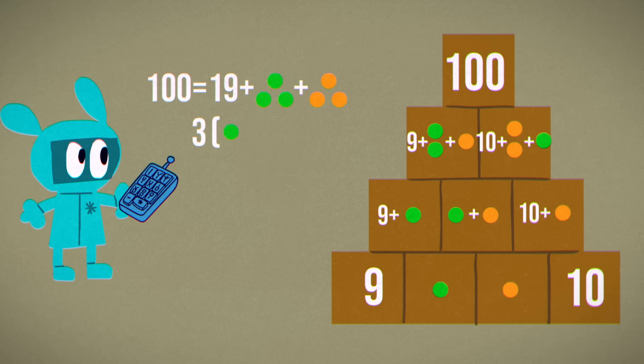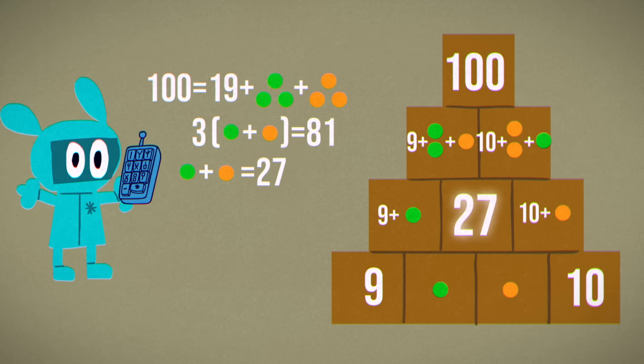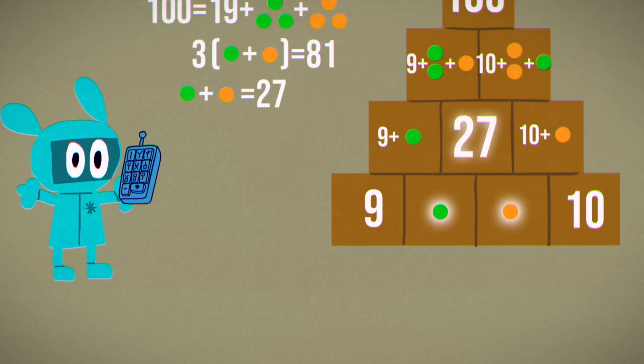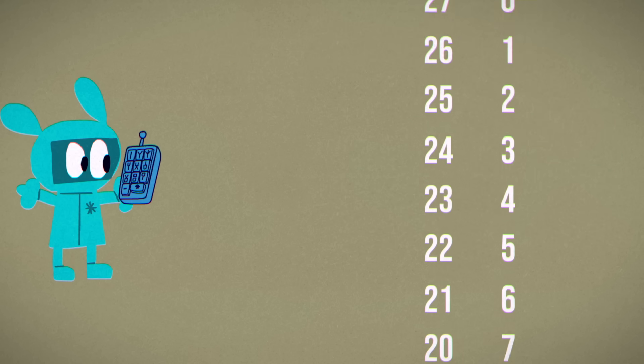So 3 times green plus orange equals 81, and green plus orange, which is the middle number, must be 27. You don't actually have to figure out what green and orange are. In fact, they have a number of possibilities.